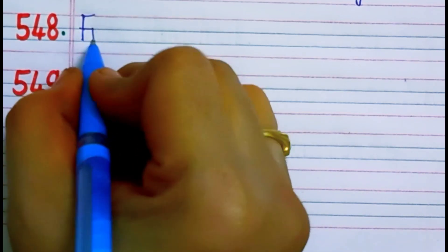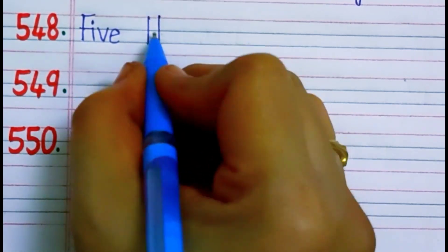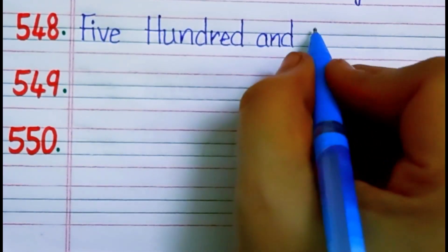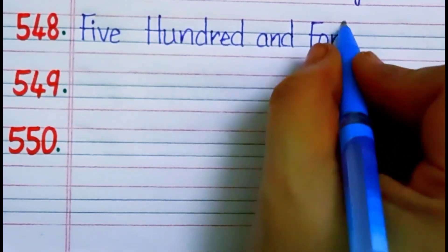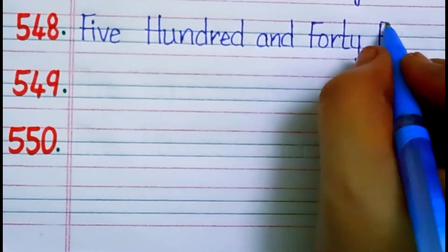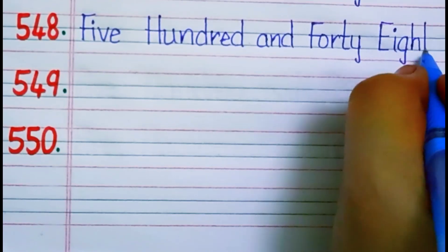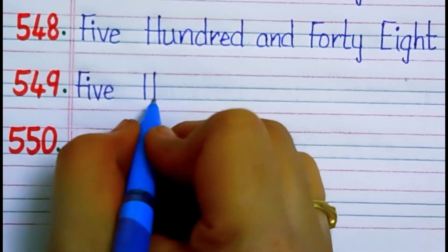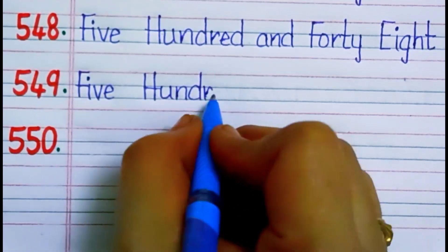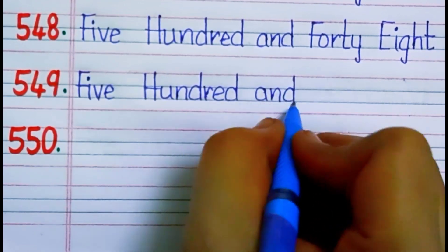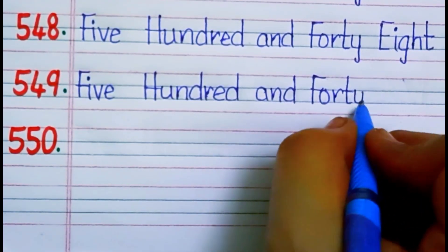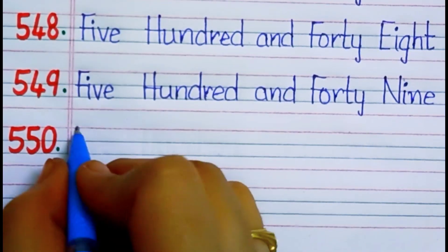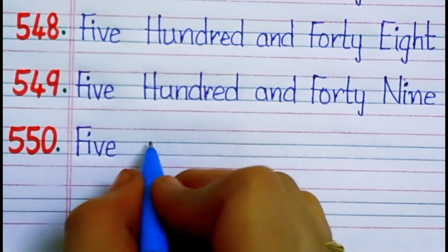Five four nine — five hundred and forty nine. F-O-R-T-Y, forty. N-I-N-E, nine. Forty nine. Five five zero — 550. F-I-F-T-Y, fifty.